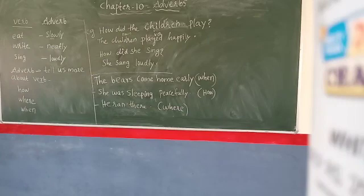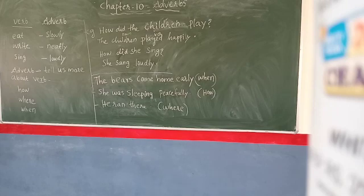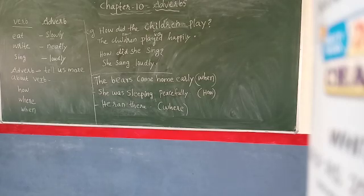First of all, we will see about what is meant by Articles. Articles are words which tell us when something happened, where something happened, how something happened, or how someone did something.